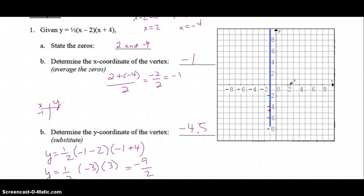My zeros are positive 2 and negative 4. Using those three points, you can smoothly sketch the best parabola you can. Mine's not wonderful, but rough parabola. There it is, and we've got ourselves a vertex.